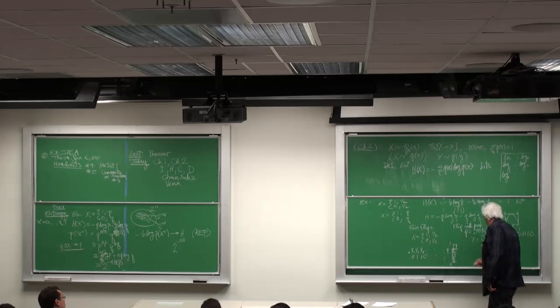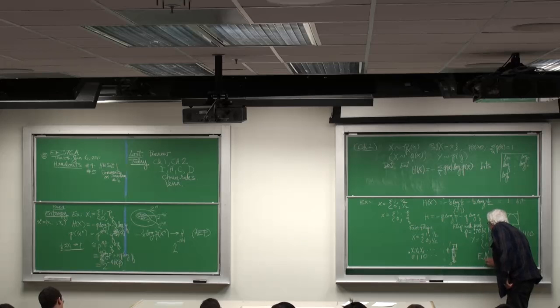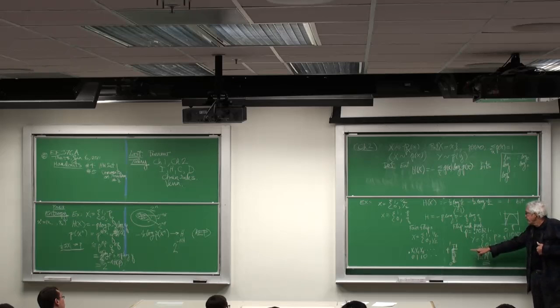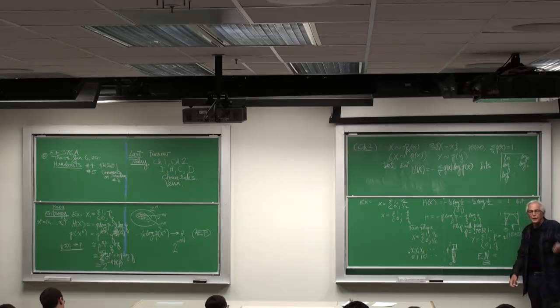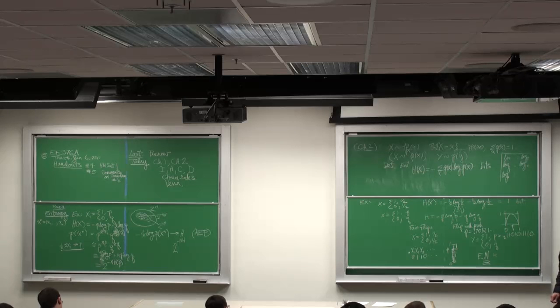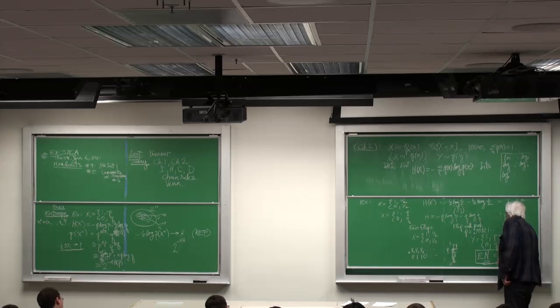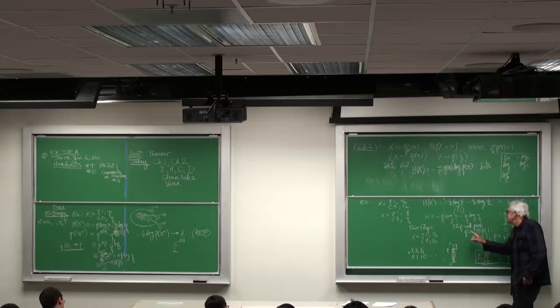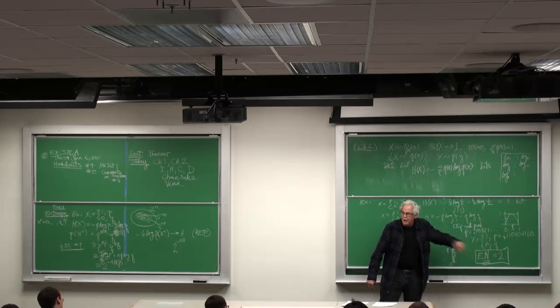So indeed, the expected number of coin flips required to determine what Y is is the waiting time for the first tail in a sequence of fair coin flips. And that turns out to be 2. So indeed, with 2 coin flips, you can turn this pure randomness into this arbitrary randomness and binary randomness there.